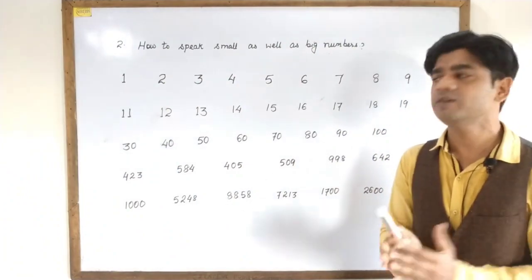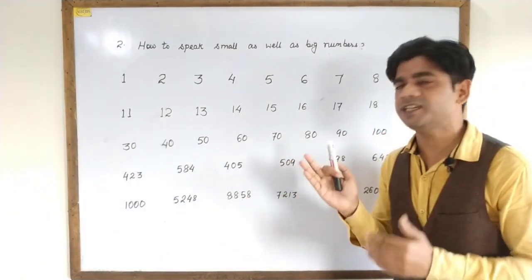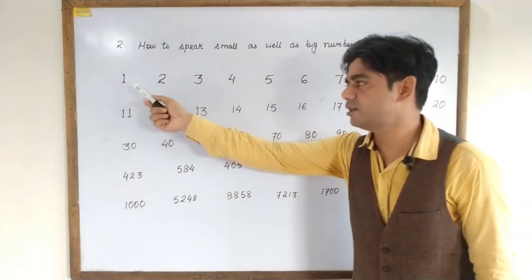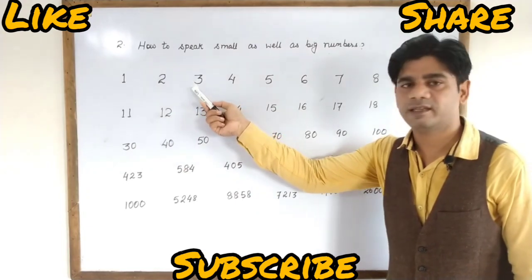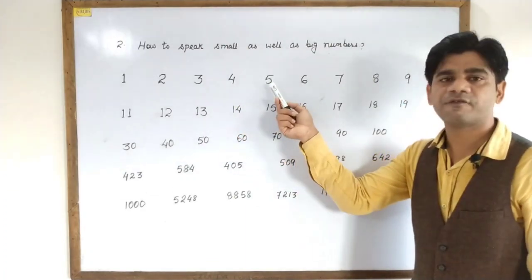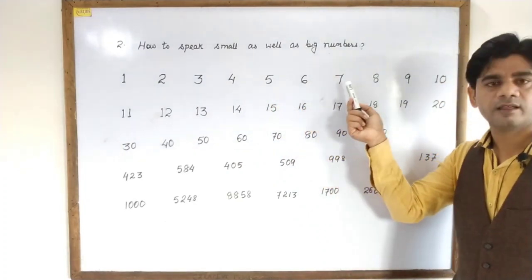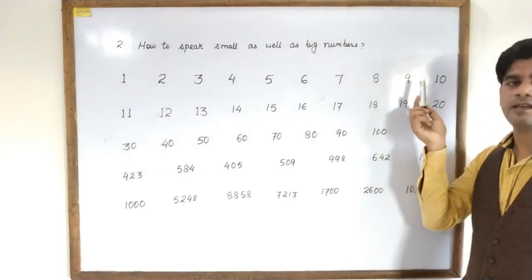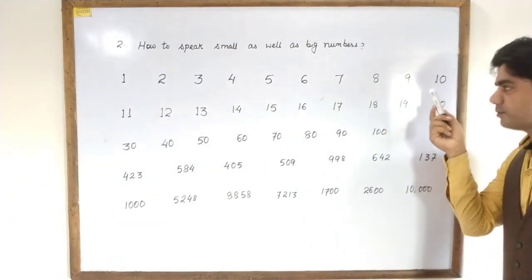We have learned pronouncing these numbers in an Indian accent. Now we are moving towards pronouncing these numbers in an American accent. I'll read it twice and you will repeat it twice after me. One. One. Two. Two. Three. Three. Repeat after me twice. Four. Four. Five. Five. Six. Six. Seven. Seven. Eight. Eight.